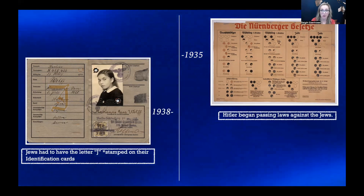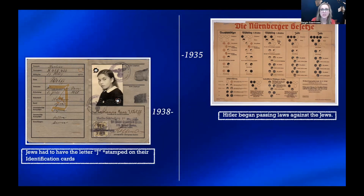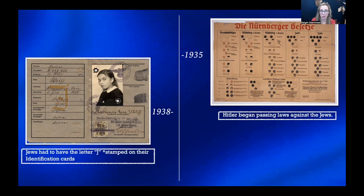As Hitler's Nazi army conquered countries, they began requiring everyone to register for a KIN card, or identification card. In 1935, the Nuremberg race laws stripped Jews of their citizenship and prohibited them from marrying non-Jews. By 1938, Jews had to have the letter J stamped on their identification cards, and Jewish children were banned from state schools.